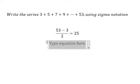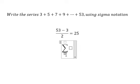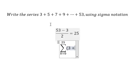So we put the summation in here. We have k equals 0 and we stop at 25. The first number is 3 and the difference is 2.